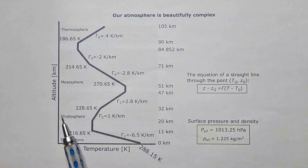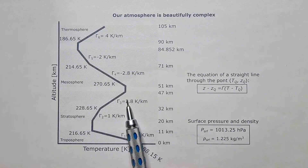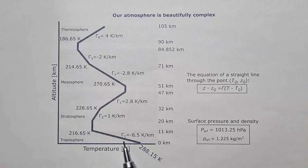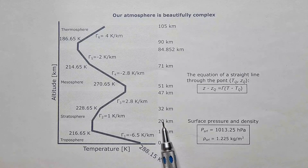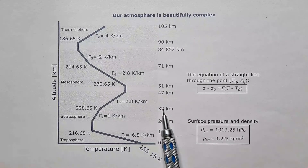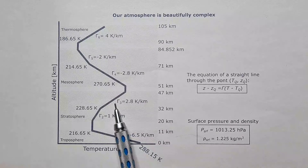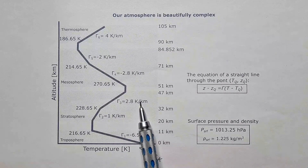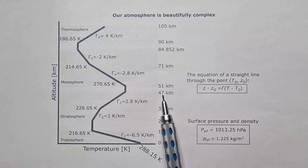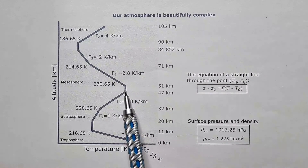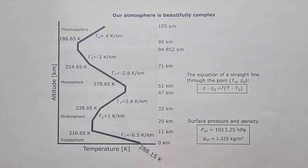Then, in the stratosphere, we have two gradients, but both are positive in comparison to the troposphere. First, temperature is increasing at 1 kelvin per kilometer between 20 and 32 kilometers above the surface. And then it is increasing at a higher rate of 2.8 kelvins per kilometer between 32 and 47 kilometers above the surface. And then we are in the stratopause, where temperature is constant with height.